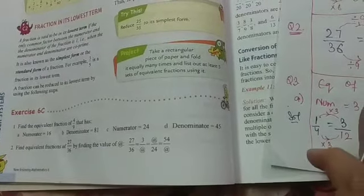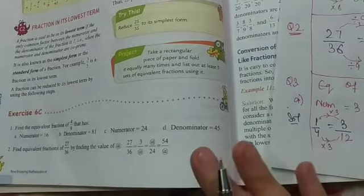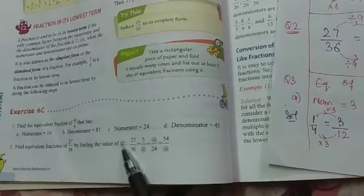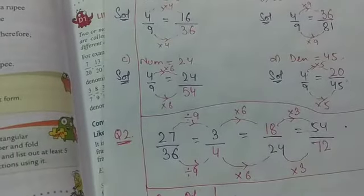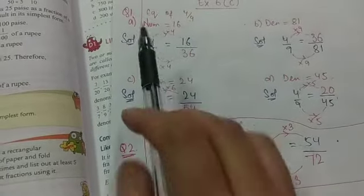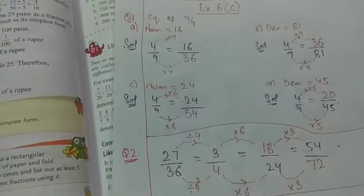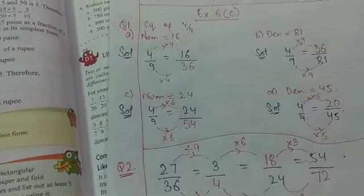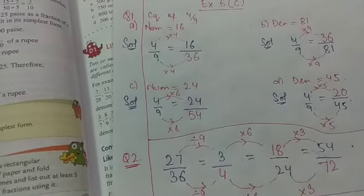Now question number second is the equivalent fraction of 27 by 36 by finding the values. Now the equivalent fraction students don't change the values. So we will multiply by the numerator and divide by the denominator.